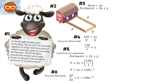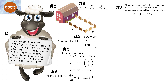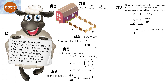Number six, we find the derivative. When we do that we get 2 minus 120x to the negative two. Number seven, since we are looking for a minimum, we find the vertex by making the derivative equal to zero. This gives us zero equals 2 minus 120x to the negative two. The next step is to change x to the negative two into a fraction: zero equals 2 minus 120 over x squared. We subtract 2 from both sides.